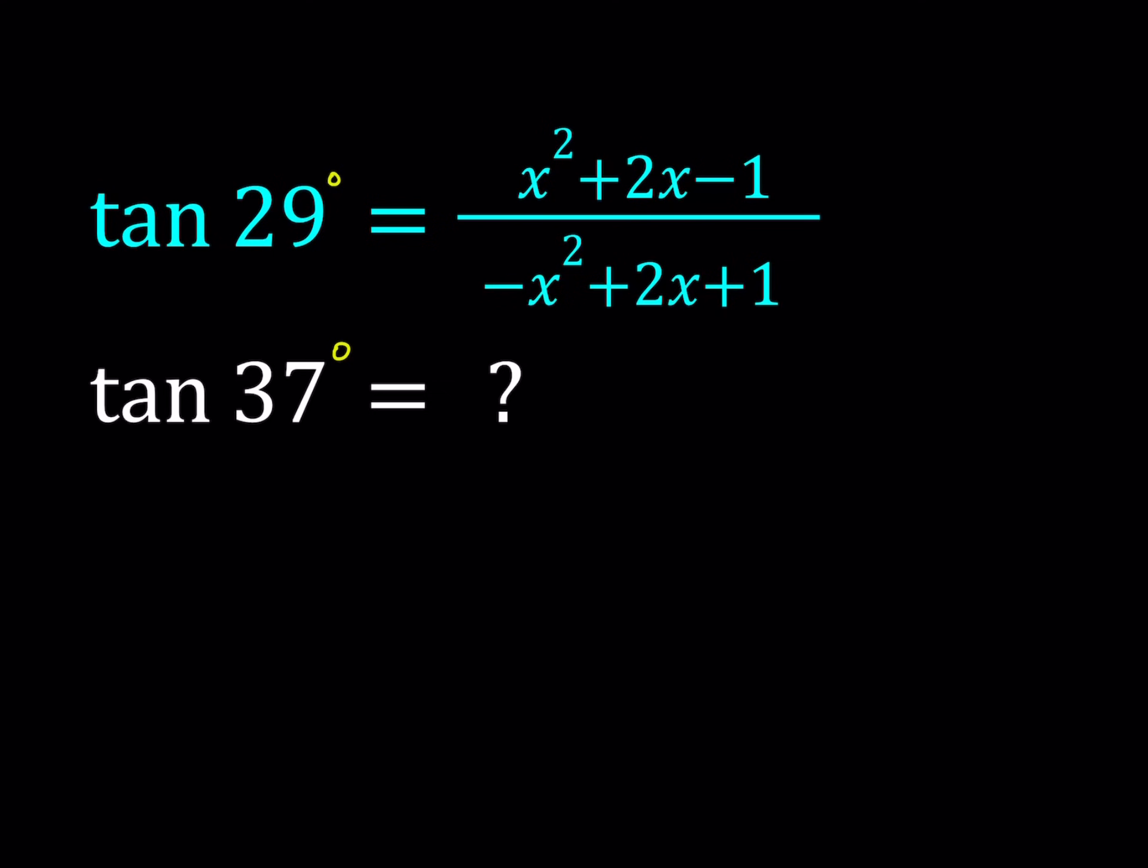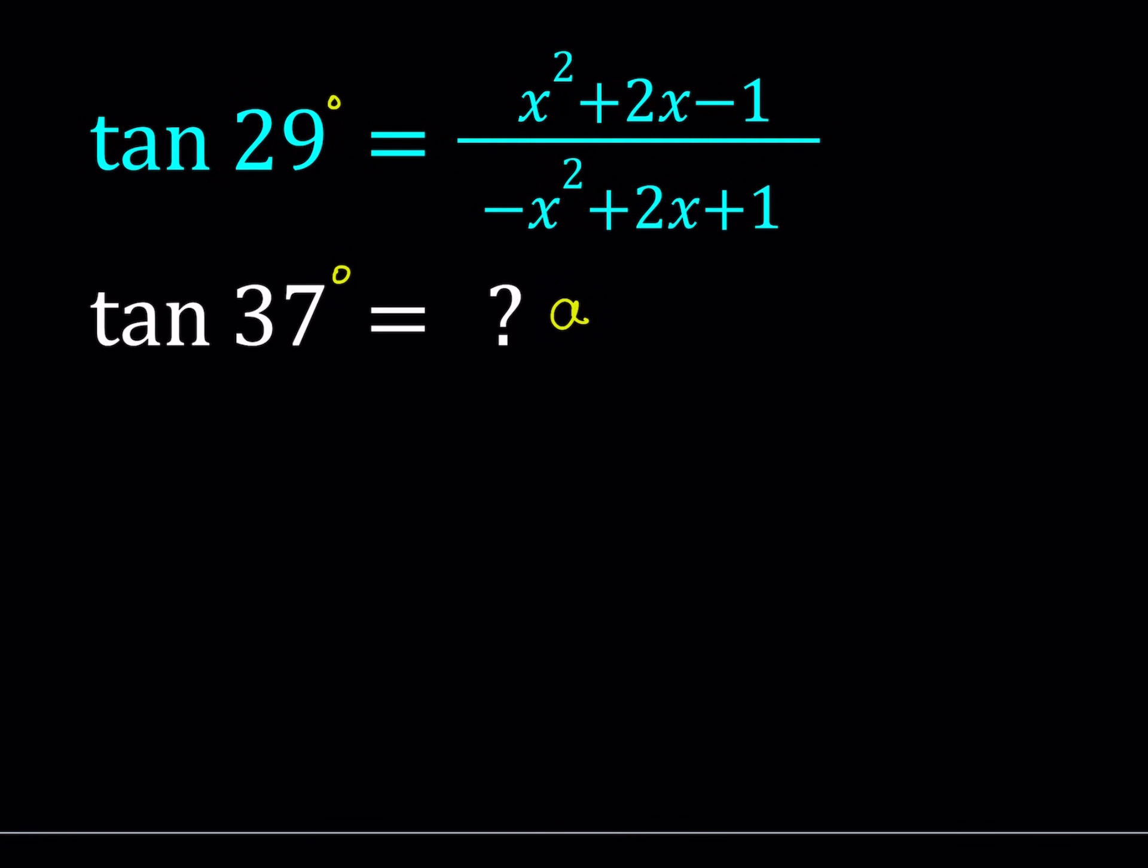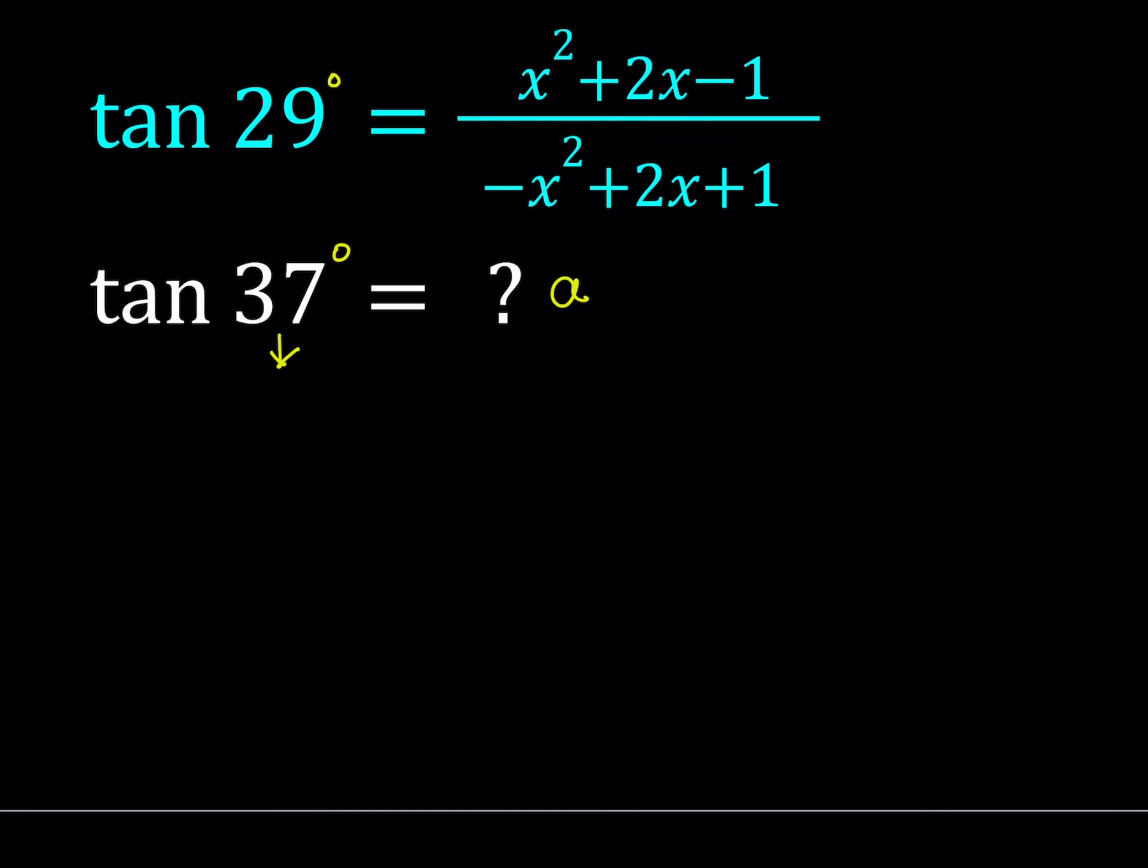Let's go ahead and set tangent 37 equal to a, something simple. Normally, if we're given an expression, we will try to build the other one from the first one. But this time, I'm going to start off with 37 because a is simpler than the given expression. And again, the answer is supposed to be in terms of x.